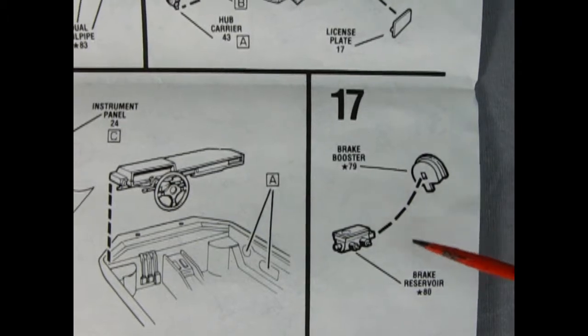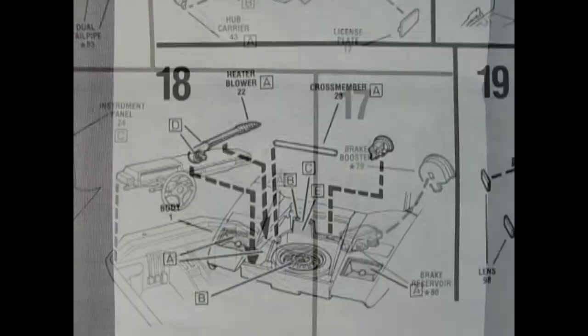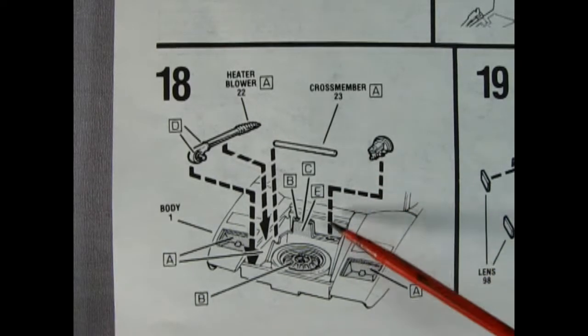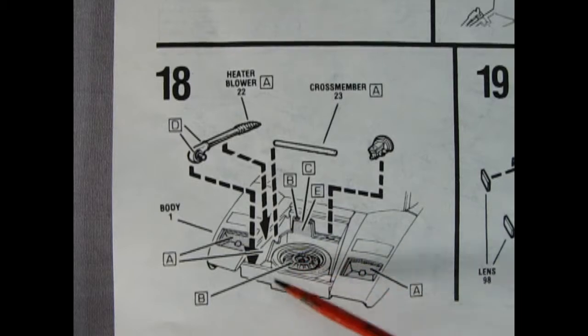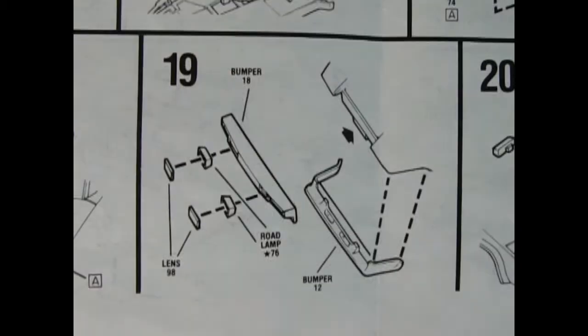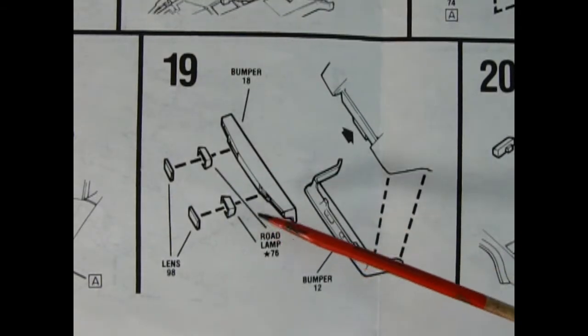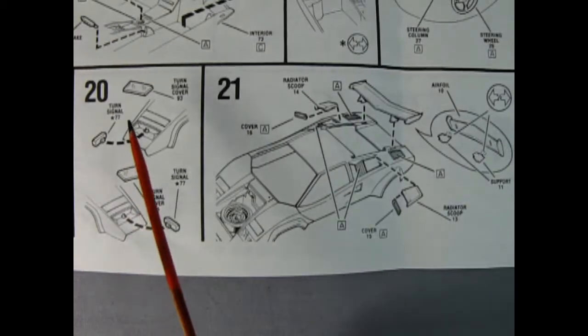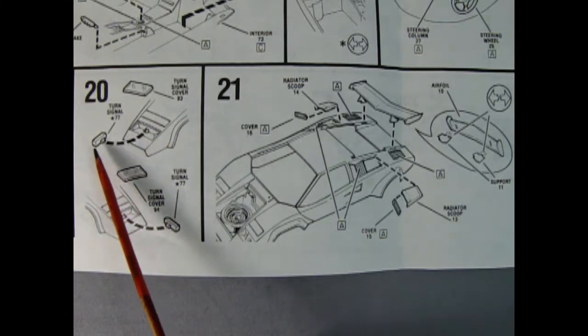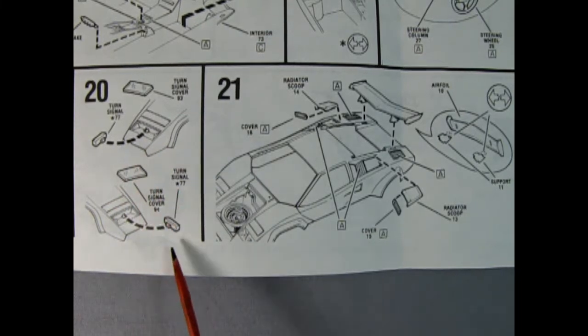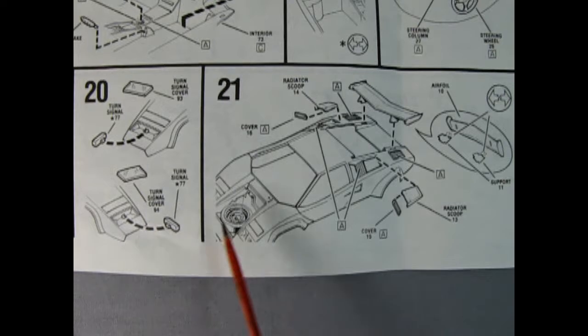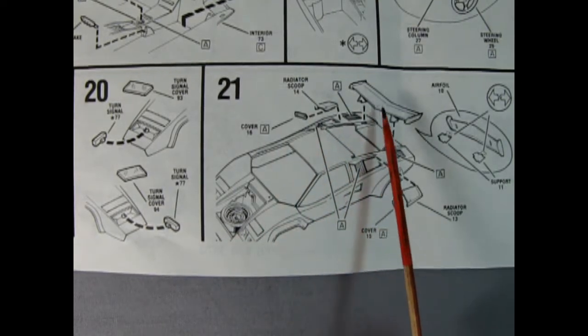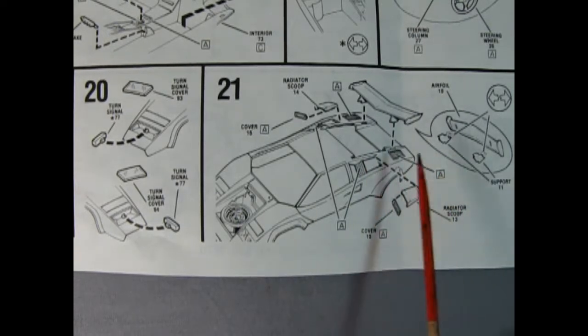Now panel 17 shows the two-piece brake booster going together. Panel 18 shows our heater blower, the cross member, and our master cylinder being dropped into the front of the car. And there's this nice tire molded in place as well. Panel 19 shows our bumper with the road lamps and the lenses. And that goes on to the front of the car. Now on panel 20 we've got our turn signal cover going on top of these chrome plated turn signals. So again Trevor's got to improvise somehow on that one. And then we've got our radiator scoops going on with the two-piece there. And then that nice rear wing dropping in place. It's even got supports.